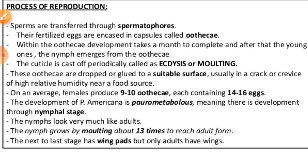The ootheca is a dark reddish or blackish-brown capsule about 8 mm long. After formation, the ootheca is dropped onto a suitable surface — usually in a crack or near food sources where humidity is present. On average, the female produces nine to ten oothecae, each containing 14 to 16 eggs. Development proceeds through nymphal stages — the young ones of the cockroach are called nymphs. The nymph looks very much like an adult and grows by moulting about 13 times to reach adult form. Only adult cockroaches have wings.